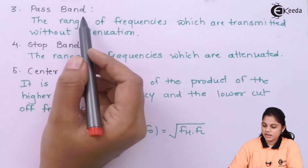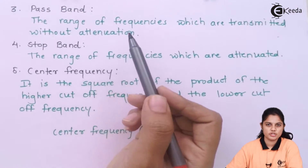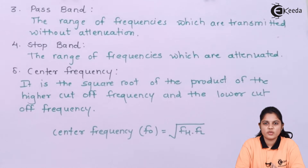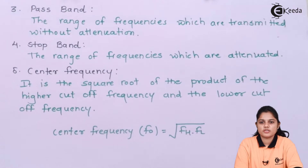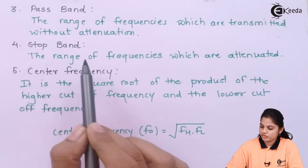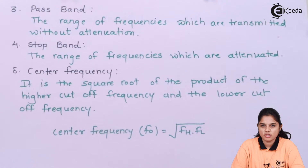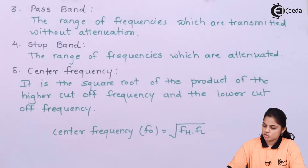Third is pass band — the range of frequencies which are transmitted without attenuation. For example, for a low pass filter with a cutoff frequency of 10 kHz, from 0 Hz to 10 kHz the frequencies will pass, but after 10 kHz they will be blocked. So that 0 to 10 kHz frequency band is known as the pass band. Stop band is the range of frequencies which are attenuated — after 10 kHz the frequencies get blocked or attenuated, and that is known as the stop band.